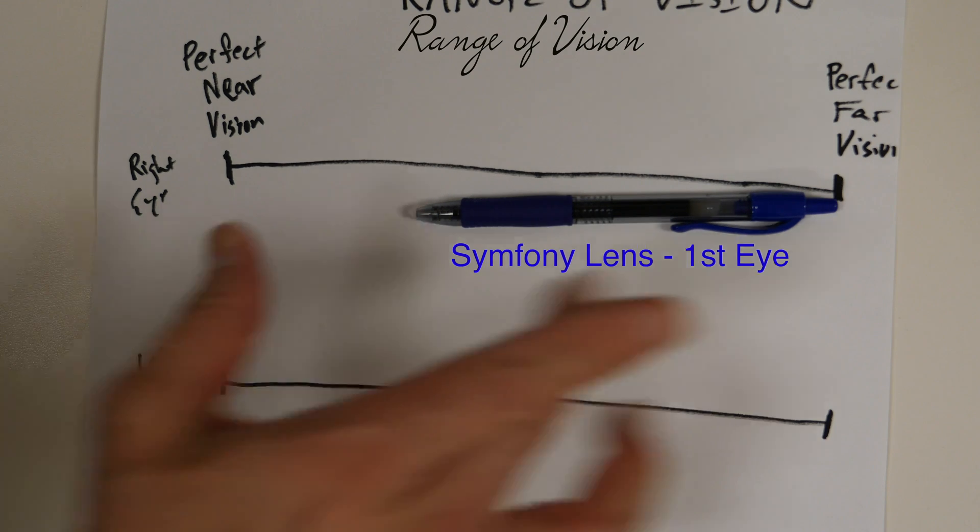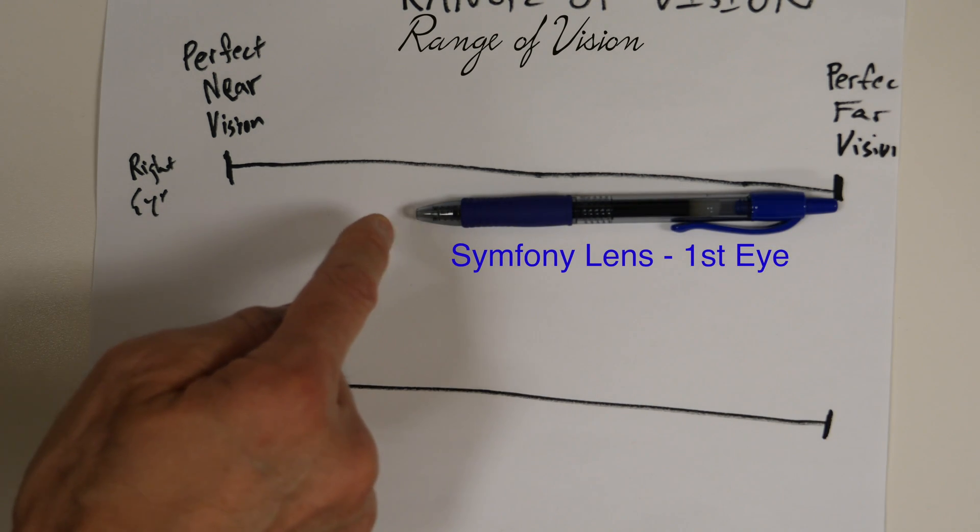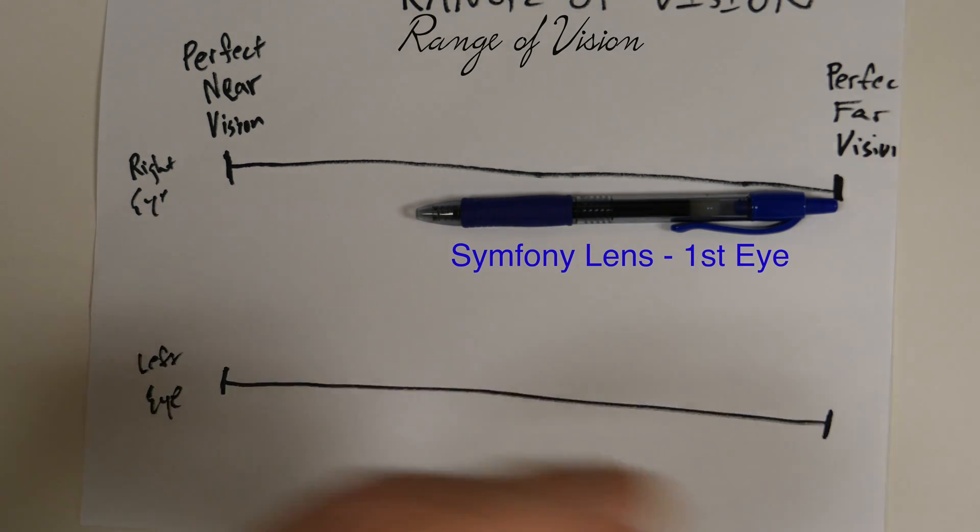So if this is your right eye, you'll see far and you'll see maybe to your computer, but for up close, you're going to need weak reading glasses.